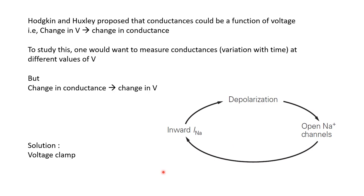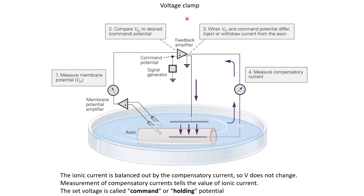A solution to this problem is obtained by voltage clamp, which allows us to fix the voltage at a particular value. Let us see how voltage clamp actually works. We have a neuron in a petri dish — an axon whose voltage we are trying to clamp at a particular value. We place a recording electrode inside the axon and a reference electrode outside. This recording electrode tells us the voltage of the neuron relative to outside, and this difference can be fed to an amplifier.